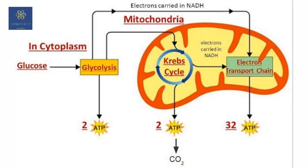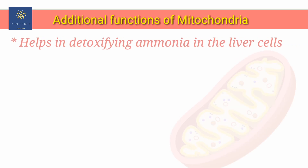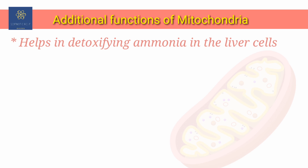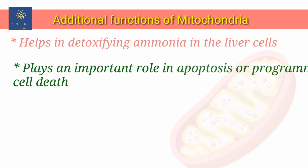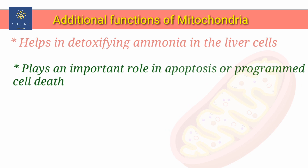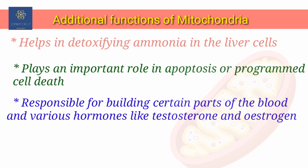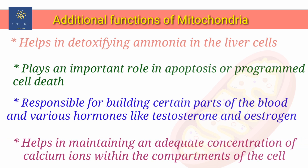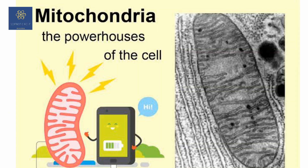Mitochondria are also involved in other metabolic pathways beyond ATP production, such as beta-oxidation and the Krebs cycle. In addition, mitochondria help in detoxifying ammonia in liver cells. They also play an important role in apoptosis, or programmed cell death, and are responsible for building certain parts of the blood and various hormones like testosterone and estrogen. They also help in calcium homeostasis, maintaining an adequate concentration of calcium ions within the cell's compartments.